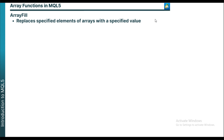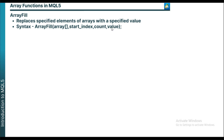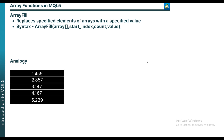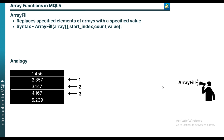ArrayFill is the function you can use to replace specified elements of an array with a specified value. The syntax includes four parameters: the identifier for the array, the index you want the replacing to start from, the count, and the value you want to replace the elements with. Using analogy, imagine you have an array and you want to change elements at index 1, index 2, and index 3 to a specified value — that is where ArrayFill comes in. You can use this function to change the elements to a specified value, for example 10.